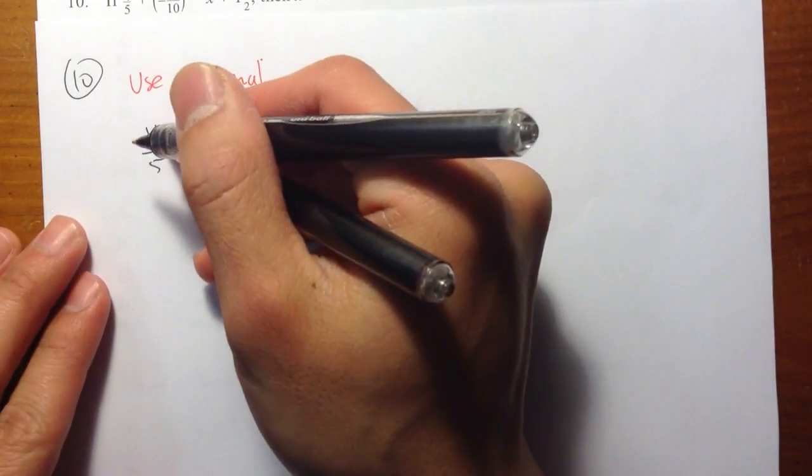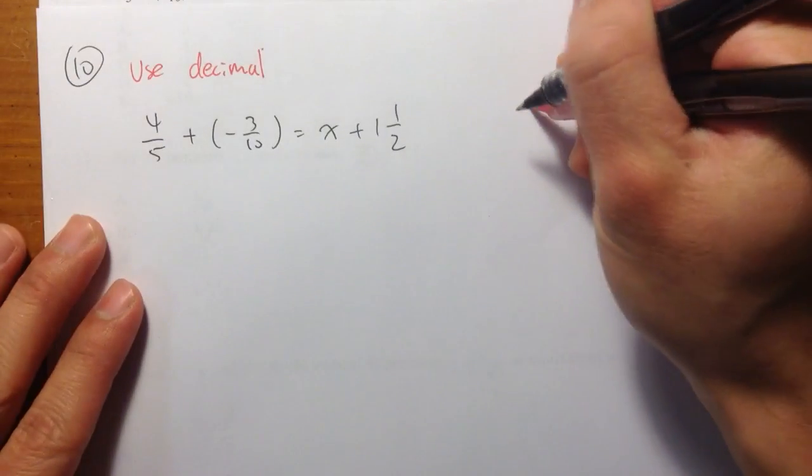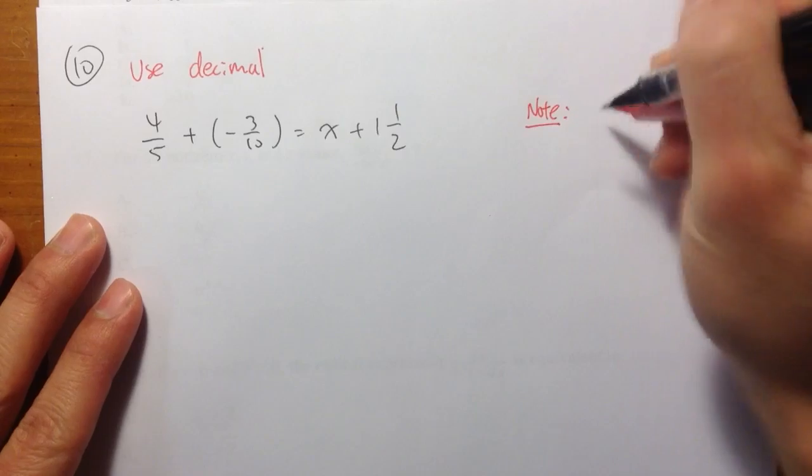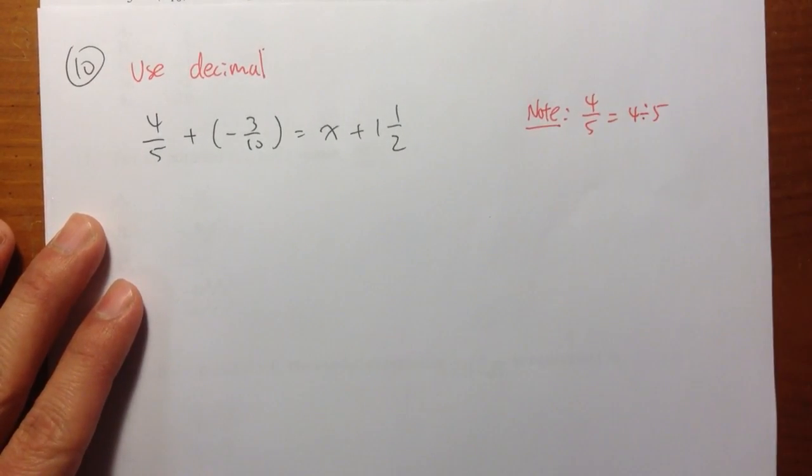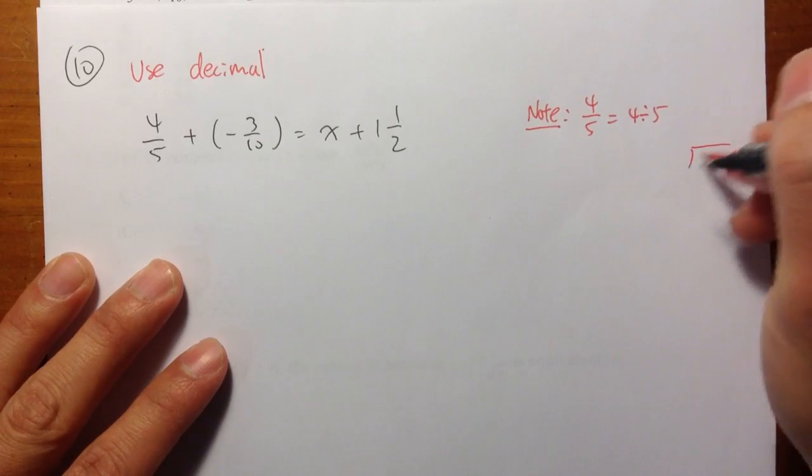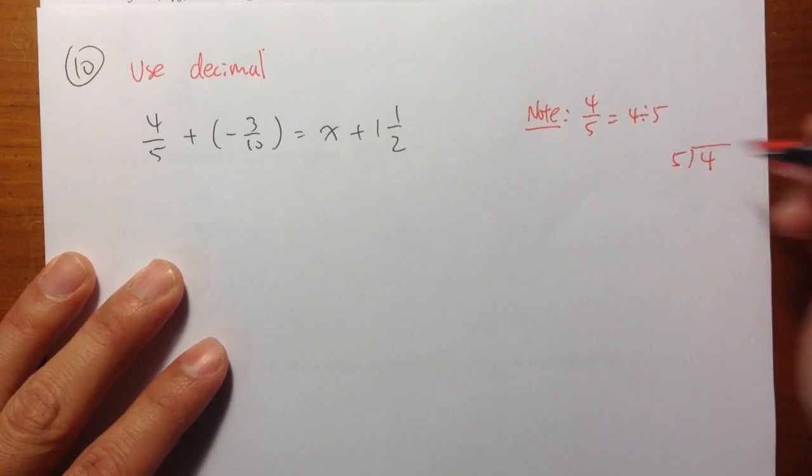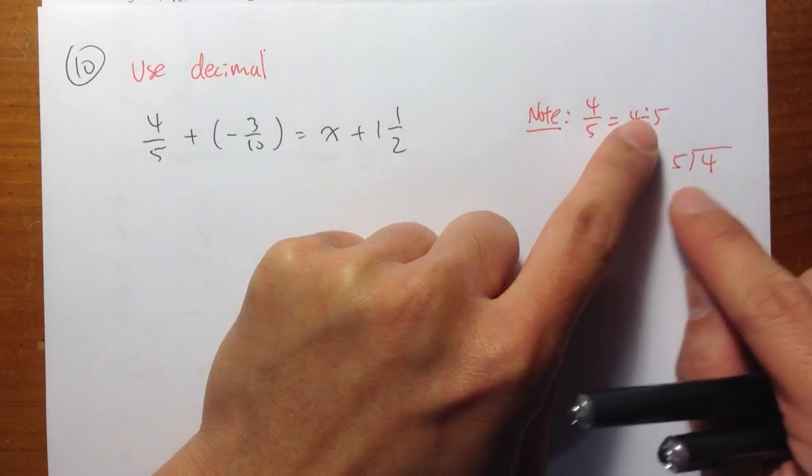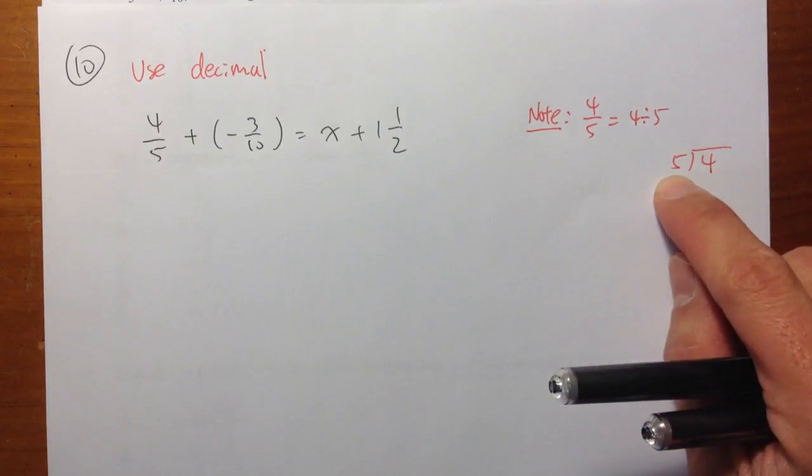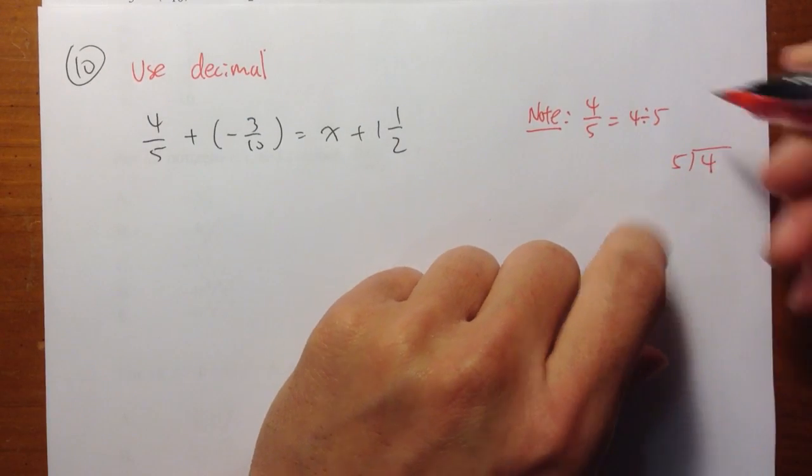Let's take a look at 4 over 5. Let me make a note on the side. 4 over 5 means 4 divided by 5. We can do the long division. Put a 4 inside and a 5 outside. Because 4 is the first number, you put it inside and then you put 5 on the outside.